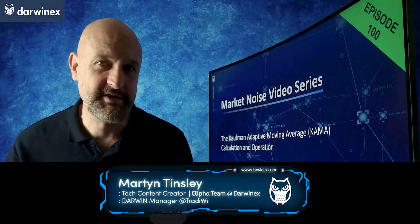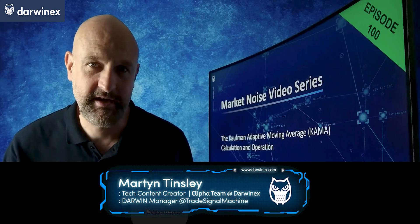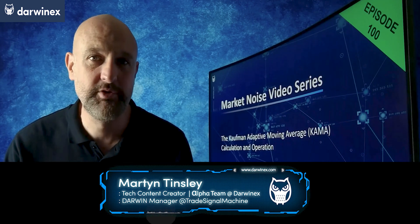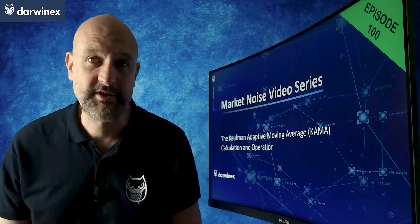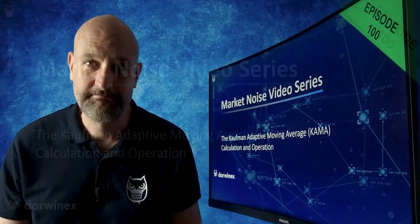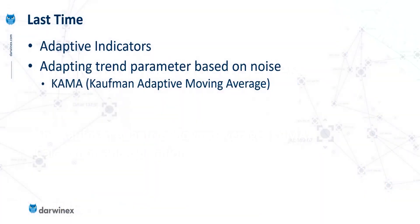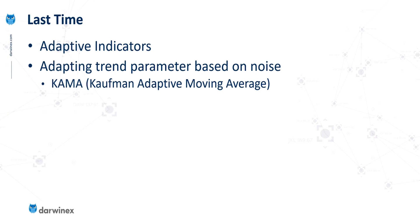Now, back to today's tutorial. The Kaufman Adaptive Moving Average uses an ingenious technique in order to speed up or slow down the moving average line, based on what's required to avoid the effects of noise. Last time, we considered the benefits of using adaptive indicators, and in particular ones that adapt their trend parameter based on market noise. The indicator we focused on was the KAMA, or Kaufman Adaptive Moving Average.